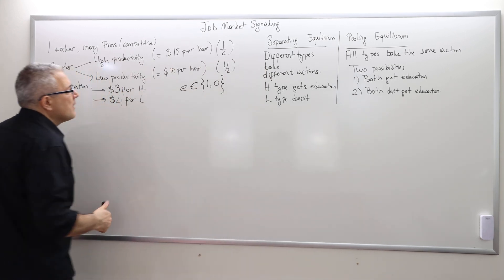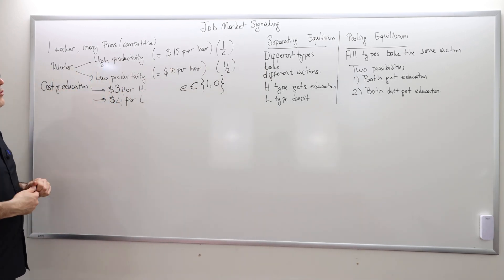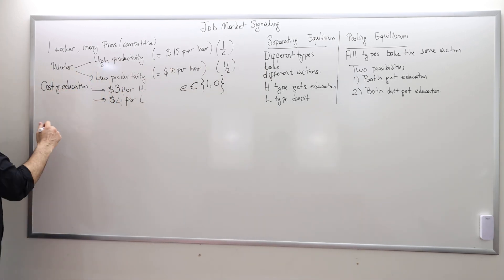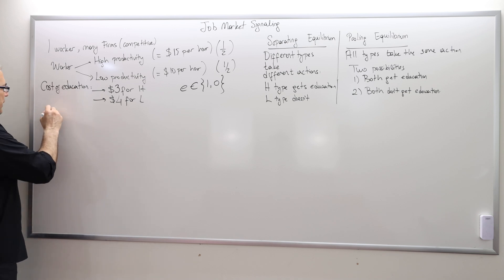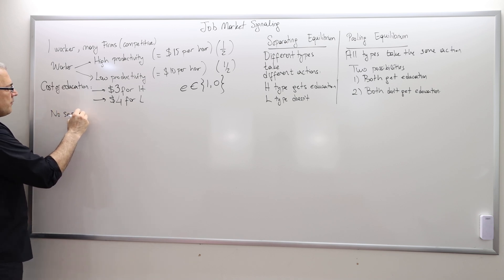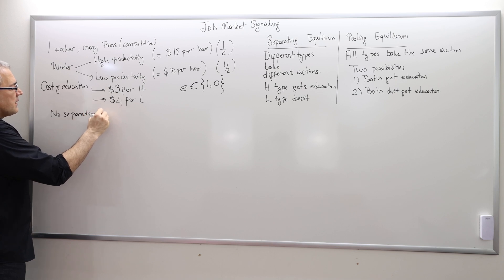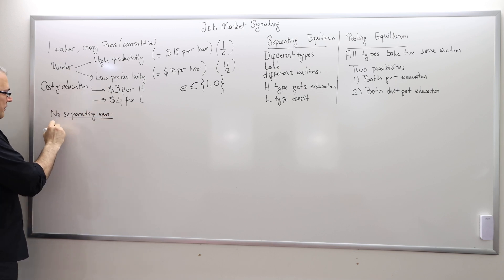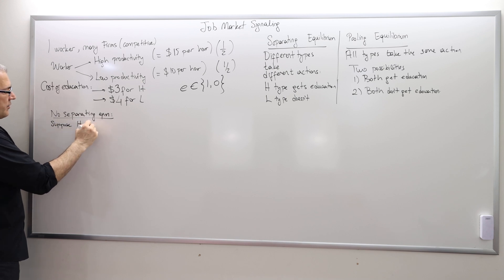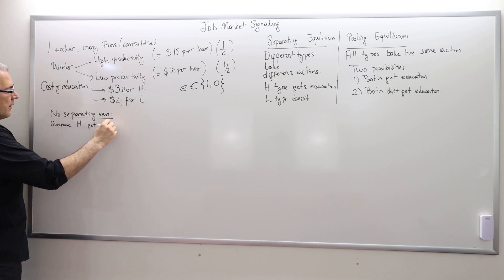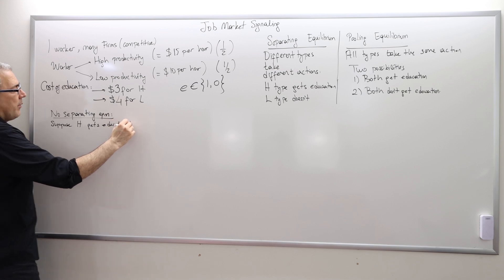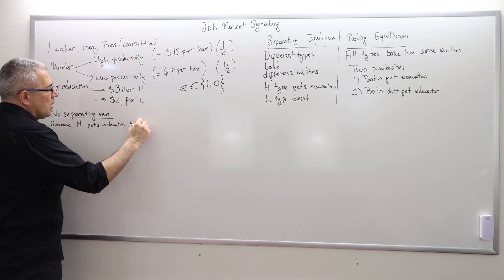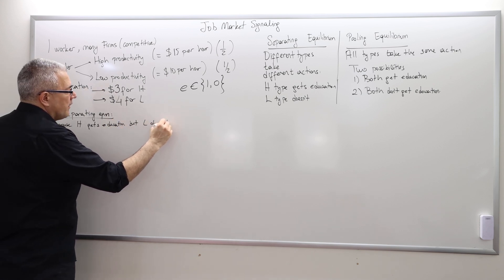This is the most inefficient outcome in this framework. The high type won't try to get an education because he can't distinguish himself from the other guy. And the low productivity guys are dying to avoid education anyway. So the only outcome is nobody getting any education whatsoever. Let's discuss why we don't have a separating equilibrium. Suppose high gets education but low doesn't.